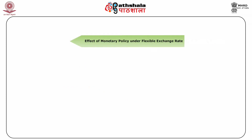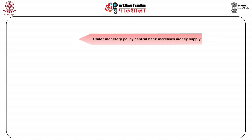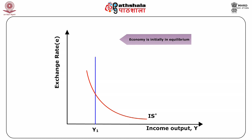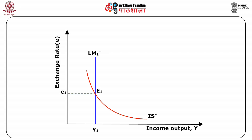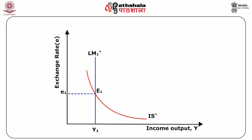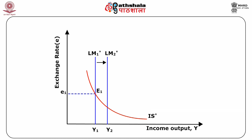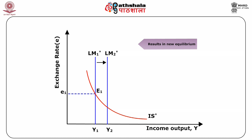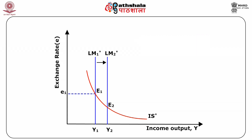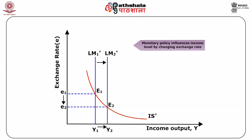Now we will discuss the effect of monetary policy under flexible exchange rate. Under monetary policy, the central bank increases the money supply. The economy is initially in equilibrium at point E1, where the exchange rate is E1 and income level is Y1. Suppose the government follows an expansionary monetary policy; then LM star 1 shifts to LM star 2 due to the increase in money supply. This results in a new equilibrium at E2, associated with a rise in income from Y1 to Y2 and a decrease in exchange rate from E1 to E2. Here, monetary policy influences the income level by changing the exchange rate.